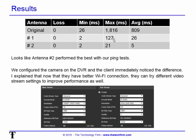Looking at the results: the original is on the first line, then Antenna 1 and Antenna 2. Antenna 2 performed the best — even Antenna 1 was pretty good, but Antenna 2 was much better. So we replaced it with Antenna 2, put the camera configuration back on the DVR, and the client immediately noticed the difference. They said it was instant — no big pause, no stutter.